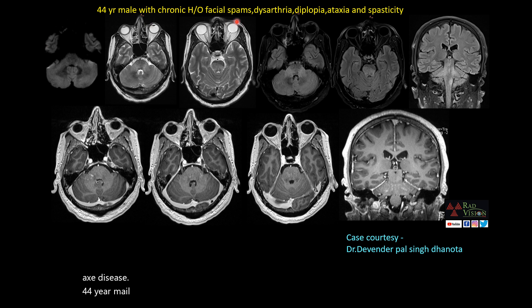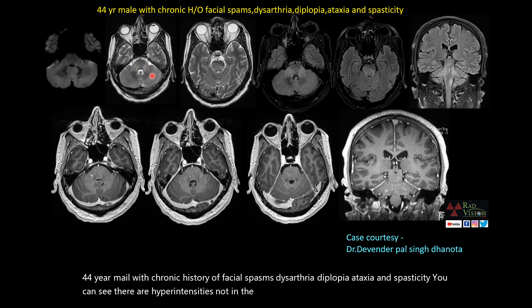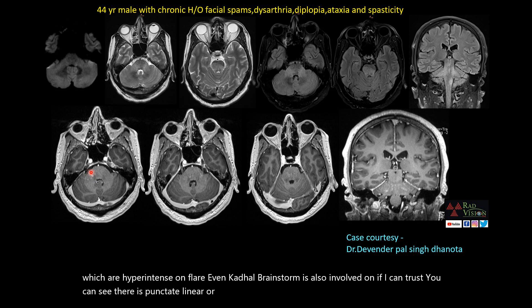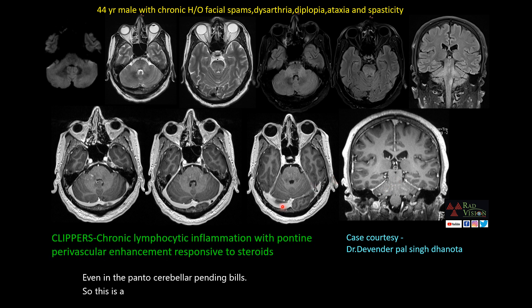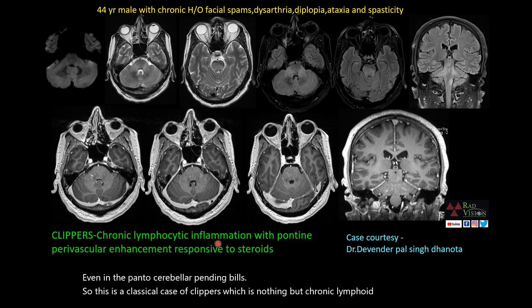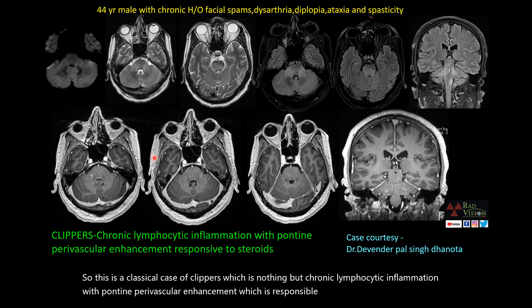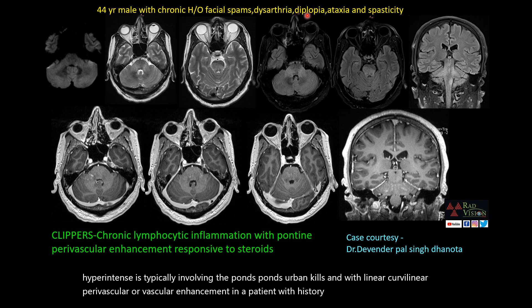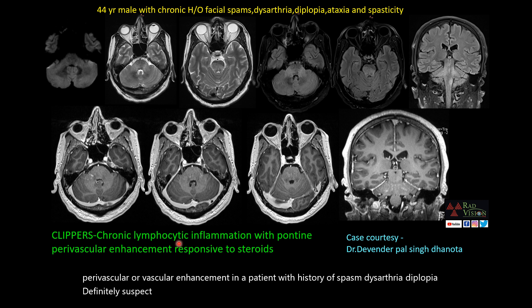Next case: a 44-year male with chronic facial spasms, dysarthria, diplopia, ataxia, and spasticity. There are hyperintensities in the pons and pontocerebellar peduncles on FLAIR, with caudal brainstem involvement. On IV contrast, punctate, linear, or curvilinear perivascular enhancement is noted in the pons and pontocerebellar peduncles. This is a classical case of CLIPPERS — chronic lymphocytic inflammation with pontine perivascular enhancement responsive to steroids. Thanks to Dr. Devendra Pal Singh Danotha for contributing this case.